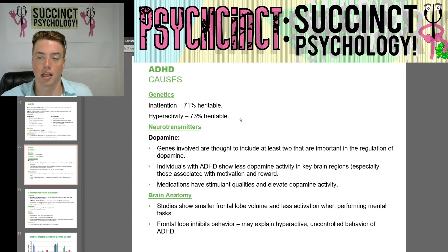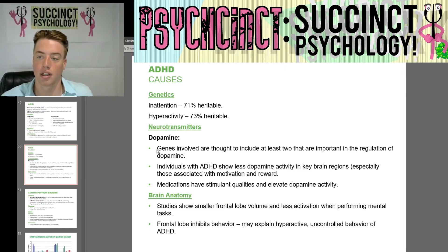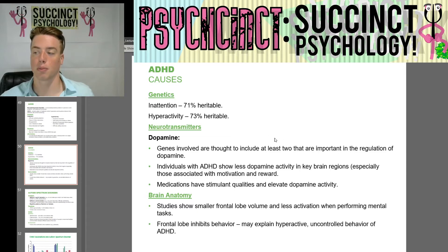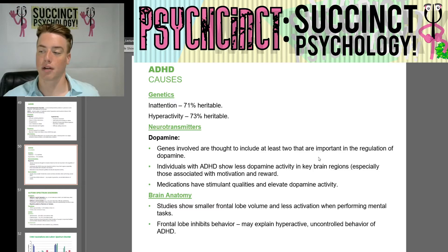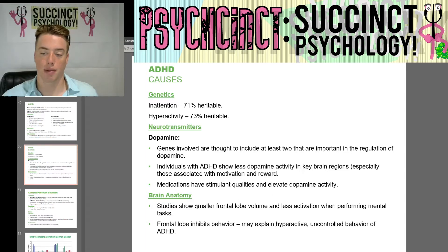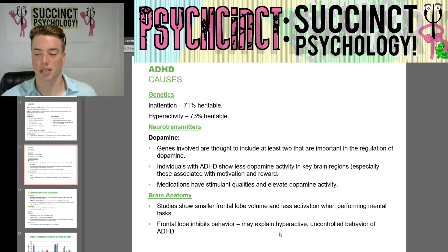Causes of ADHD: on the genetic side, inattention is 71% heritable and hyperactivity is 73% heritable. Neurotransmitters — dopamine: genes involved are thought to include at least two that are important in the regulation of dopamine. Individuals with ADHD show less dopamine activity in key brain regions, especially those associated with motivation and reward. Medications have stimulant qualities and elevate dopamine activity. Brain anatomy studies show smaller frontal lobe volume and less activation when performing mental tasks; frontal lobe involvement may explain the hyperactive, uncontrolled behavior of ADHD.